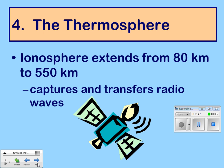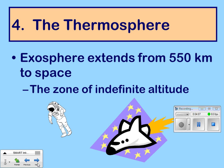The ionosphere extends from 80 kilometers to 550 kilometers. It captures and transfers radio waves, so when you're listening to the radio in the car, those radio waves come from here. The exosphere extends from 550 kilometers out to space, and this is the zone of indefinite altitude, because there's no definite area where our atmosphere stops and space starts.